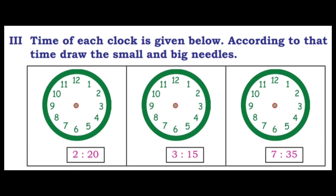Third main: Time of each clock is given below. According to that time, draw the small and big needles. First one: 2:20 — small needle at 2, big needle at 4. Second one: 3:15 — small needle at 3. Third one: 7:35 — seven o'clock means small needle at 7, and 35 minutes means big needle at 7.